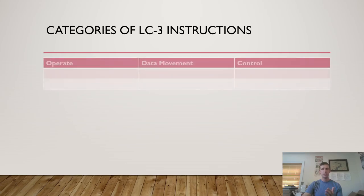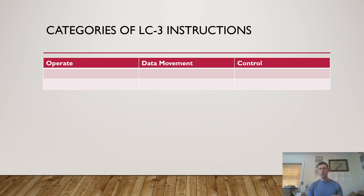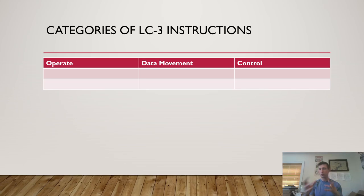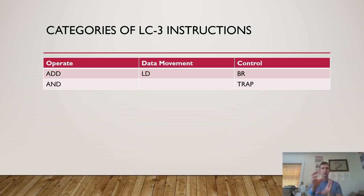There are three categories of LC3 instructions. Operate instructions — also called arithmetic and logic instructions — perform math operations on data; ADD and AND are examples. Data movement instructions move data around the computer; LOAD is an example, moving data from memory to the register file. Control instructions affect the flow of control within the LC3; BRANCH and TRAP change whether the next instruction executes sequentially or not.